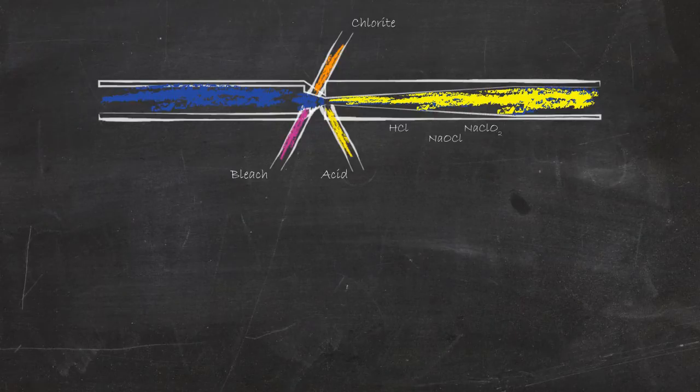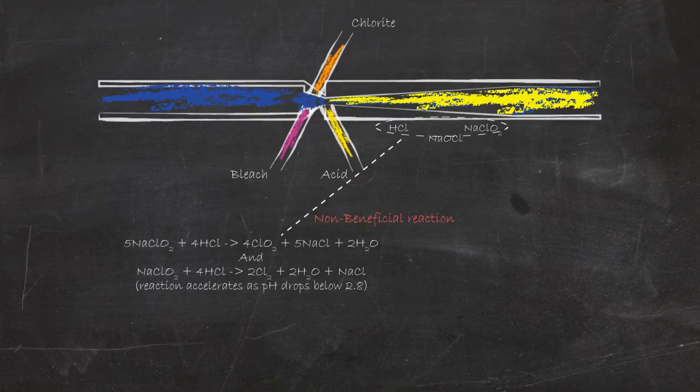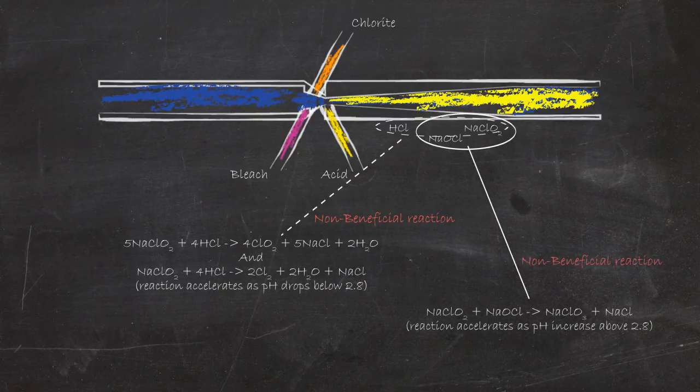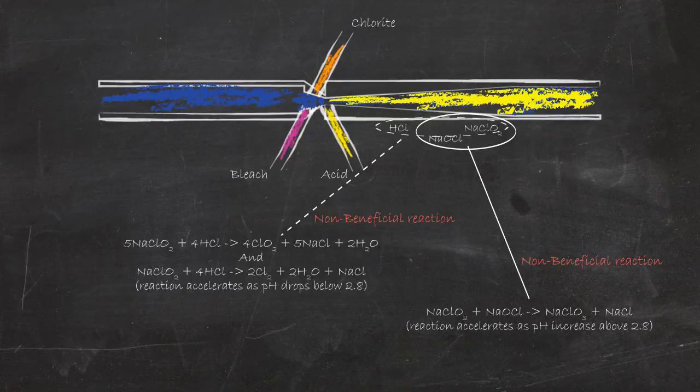Because the primary beneficial reaction is slow, this allows the occurrence of side reactions with conventional technology of sodium chloride, hydrochloric acid, and sodium hypochlorite. This includes the non-beneficial reactions for the formation of Chlorine Dioxide by the acid chloride route, formation of Chlorine from Chlorite when pHs are below 2.8, formation of Chlorite when pHs are above 2.8.